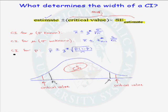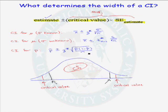And last, let's consider the confidence interval for the population proportion P. The standard error for our estimate is given by the square root of P-hat times the quantity 1 minus P-hat, divided by n. Once again, if we increase the sample size, we will decrease the width of our confidence interval.